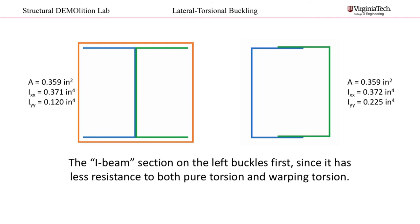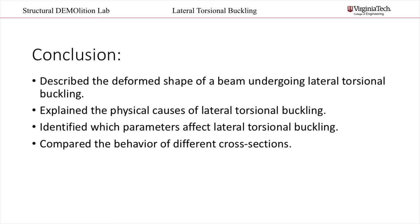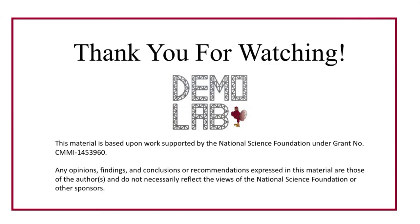The shear stress flows around the rectangular section. However, our intuition says that the I-beam would buckle first because of a bigger difference in the moment of inertia about each axis. Notice how they have roughly the same moment of inertia about the x-axis, but the rectangular section has a greater y-axis value. In conclusion, we have described the deformed shape of a beam undergoing lateral torsional buckling, explained the physical causes, identified which parameters affect lateral torsional buckling, and compared the behavior of different cross sections.